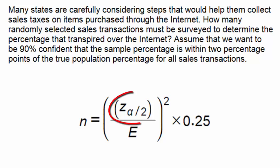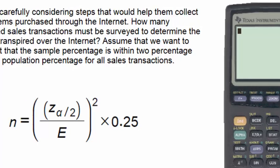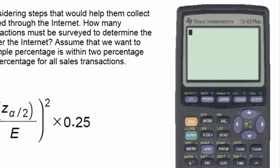We'll first find z subscript alpha divided by two, which is called the critical value and is associated with the 90% level of confidence. To find z subscript alpha divided by two, we'll take one and subtract 0.90, giving us 0.1 or 10%. This is alpha. Dividing this by two gives us alpha divided by two.